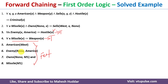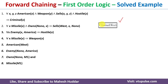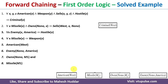Once you divide the clauses into rules and facts, we apply the forward chaining technique to prove the given statement — in this case, that West is a criminal. In forward chaining, we start with the known facts: American West, missile M1, Nono owns M1, and enemy Nono of America. We use these known facts and keep generating new facts until we reach the goal node.